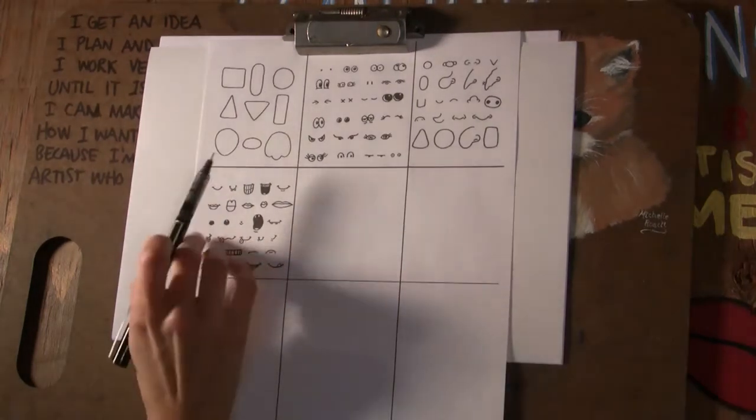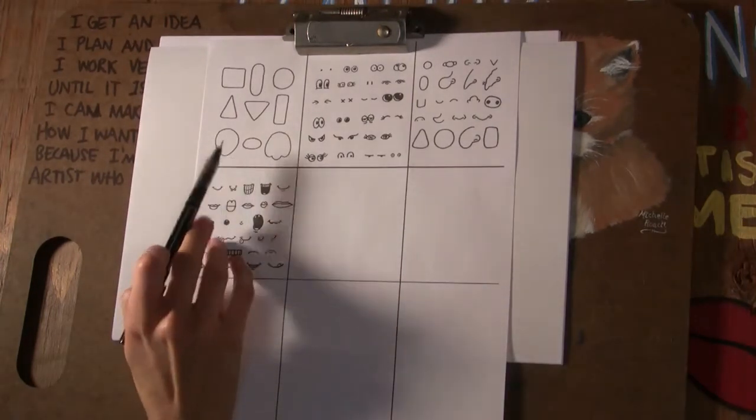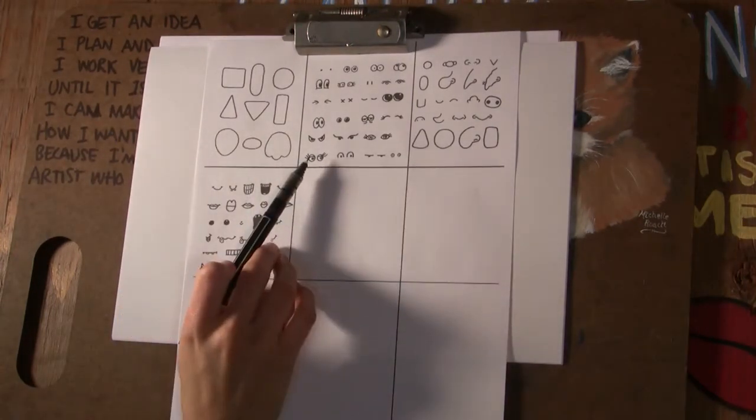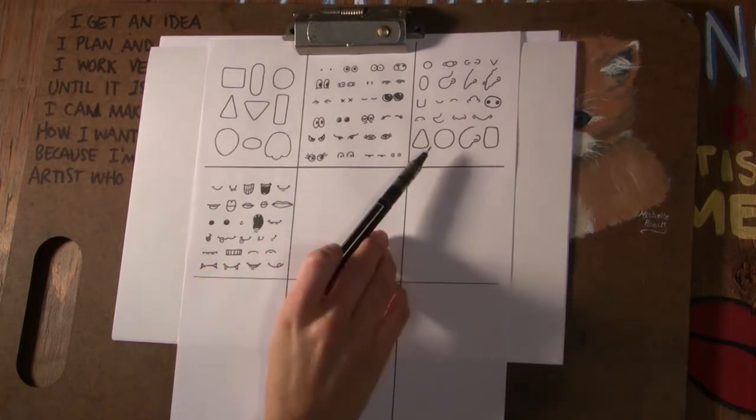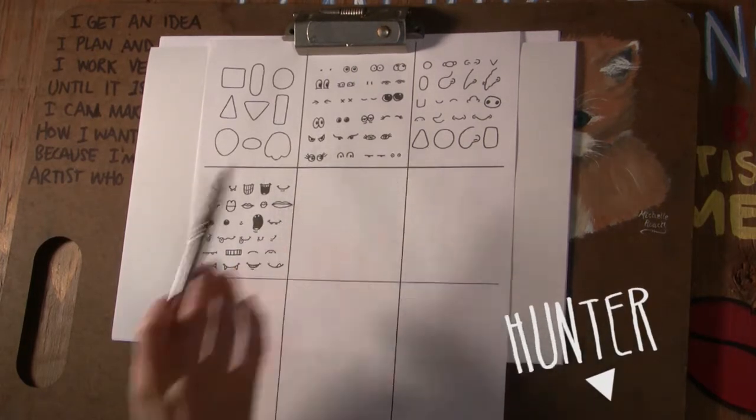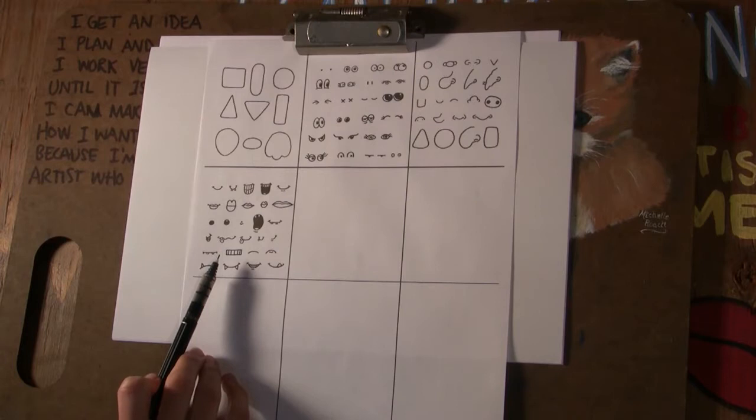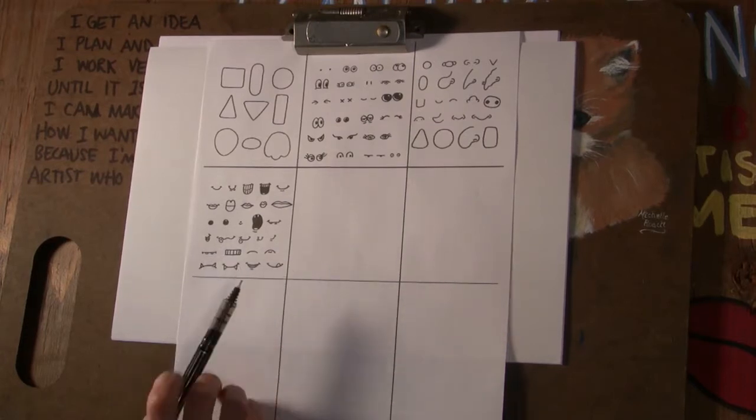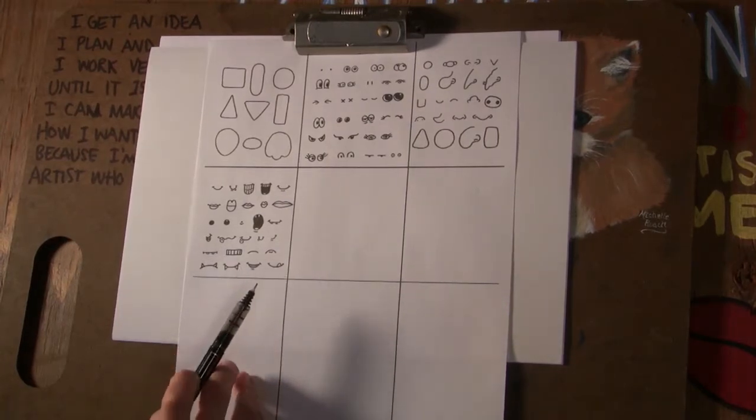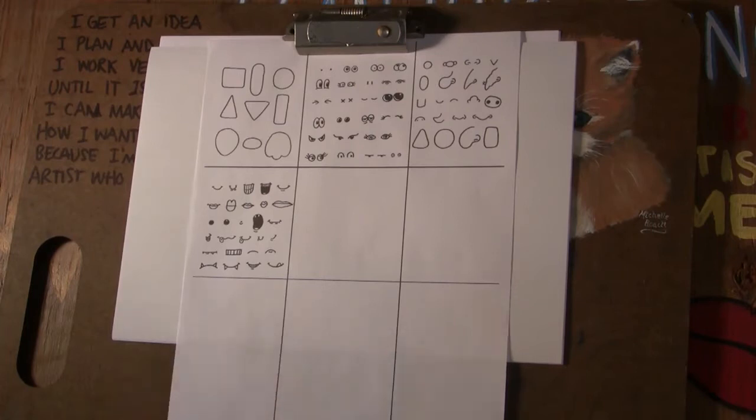Okay so we have face shapes, a whole bunch of eyeballs, noses, mouths. What else could we add? What else does a person need? A body. Well we're not gonna move into body yet. We're just gonna do the heads. Hair. Hair.